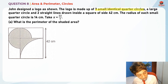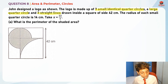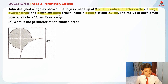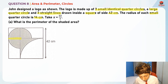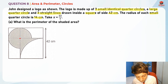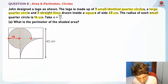The logo is made up of three small identical quarter circles, a large quarter circle, and two straight lines drawn inside a square of side 42cm. They're telling us that the radius of each small quarter circle is 14cm. So the radius — from the center point to the outer point — is 14cm, and thus this length is also 14cm.